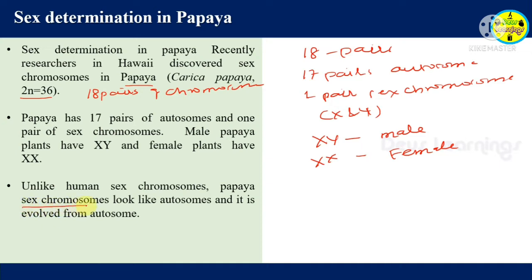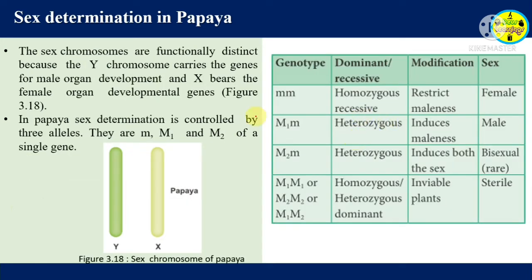The sex chromosomes evolved from autosomes — long ago the 18th pair was also an autosome, but through evolution it became the sex chromosome. The sex chromosomes are functionally distinct because the Y chromosome carries the genes for male organs — the stamen development — and X bears the genes for female organs.